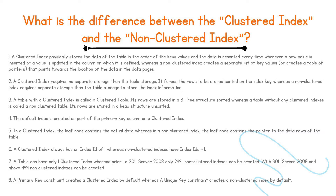Two: a clustered index requires no separate storage than the table storage. It forces the rows to be stored sorted on the index key, whereas a non-clustered index requires separate storage than the table storage to store the index information.